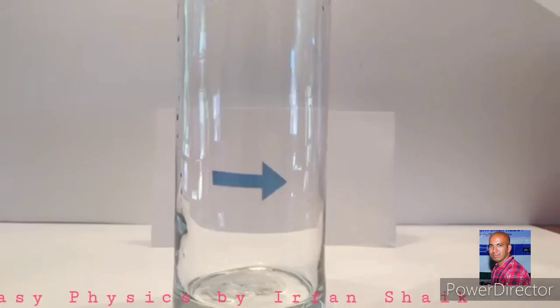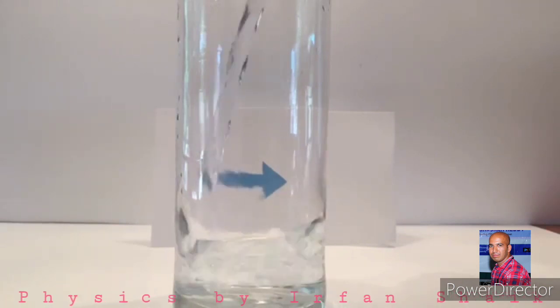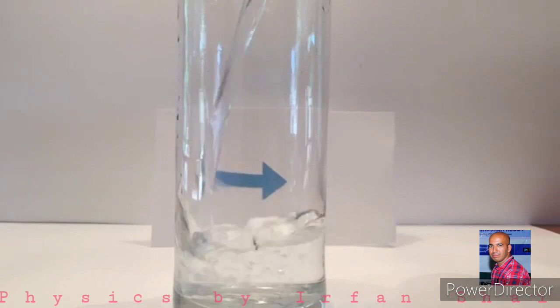Let us take another example to understand the refraction. Here, in this glass, you can observe an arrow mark.